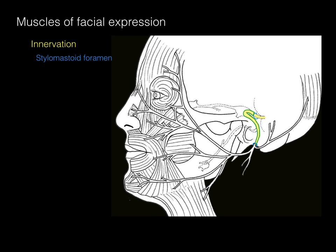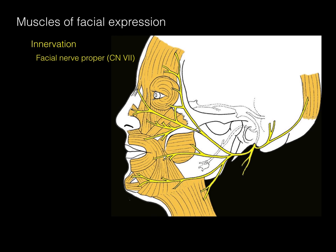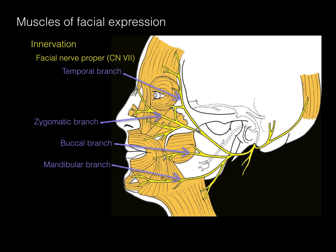Following exit of the stylomastoid foramen, the facial nerve gives rise to five branches prior to innervating the muscles of facial expression. Those five branches are, top to bottom: the temporal branch, the zygomatic branch — because they go by the temporal region and the zygomatic bone — then by the buccinator, the buccal branch, then by the lower mandible, the mandibular branch, and finally in the neck, the cervical branch.